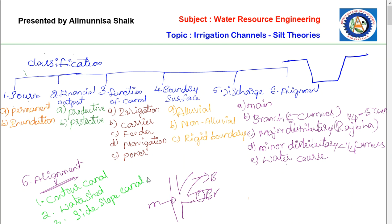In canal alignment, we show what contour canals, watershed canals, and side slope canals look like. There is a cross section here where I will be showing the canal alignment with all three categories of aligned canals.